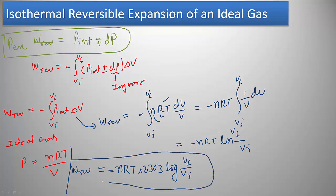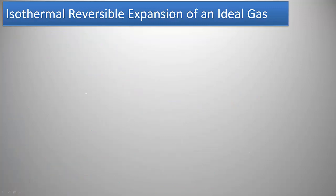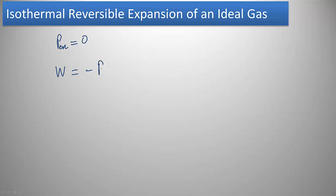Now, if we talk about free expansion — expansion when there is no external pressure, meaning P external equals zero — we know work equals minus P external times ΔV. When external pressure is zero, work is also zero. So there is no work done in the free expansion of an ideal gas.